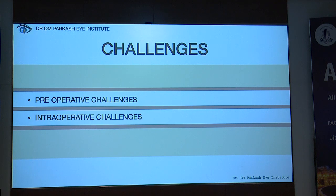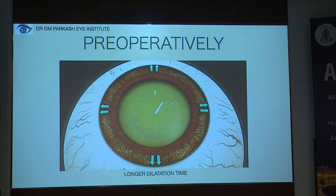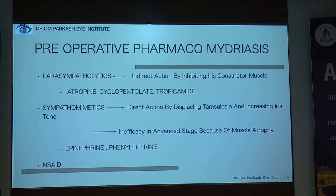The pre-operative challenges include longer dilation time — patients using Tamsulosin need adequate time for the pupil to dilate. Pre-operative pharmacomydriasis includes parasympatholytics such as atropine, cyclopentolate, or tropicamide, which inhibit iris constrictor muscles indirectly. Sympathomimetics act in concert, displacing Tamsulosin and increasing iris tone. However, they are less efficient when muscle atrophy has occurred. They can be used as epinephrine or phenylephrine along with non-steroidal anti-inflammatory drugs.